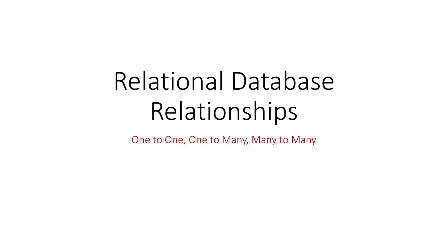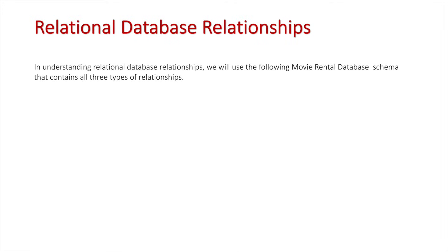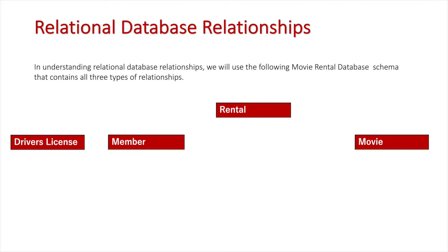In this video we're going to have an overview of the three types of relationships we look at for databases in the IPT course. We're going to use the movie rental system database from a previous activity. The entities shown are member, rental, and movie, and I've also included driver's license to illustrate another type of relationship.